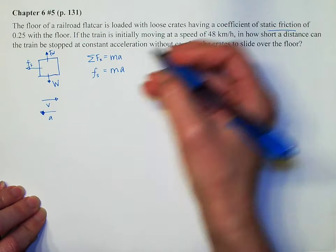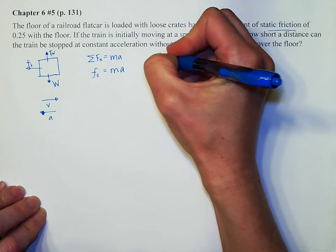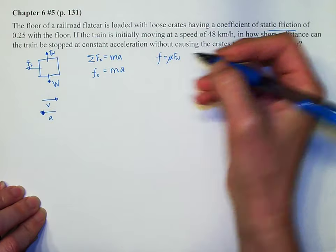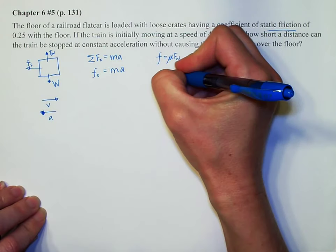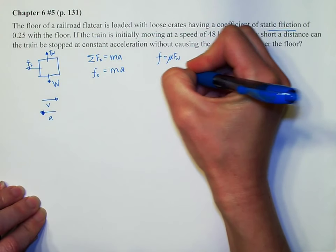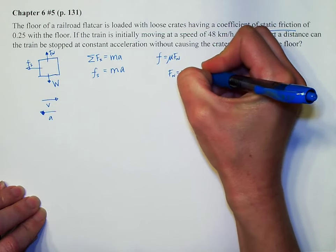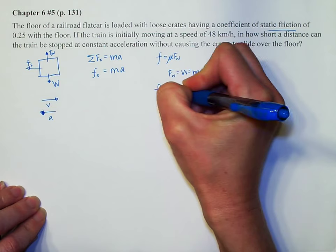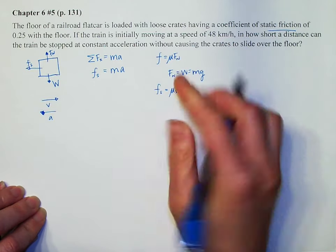But we do know that friction is fun. So f equals mu f n. And I also know that in this case, my normal force is going to be equal to my weight, which is mg. So my static friction equals mu static times mg.